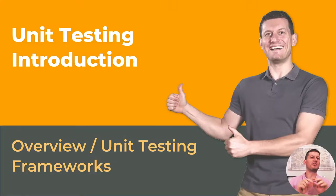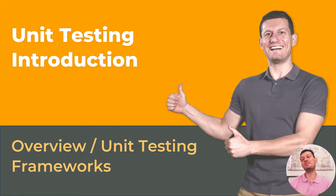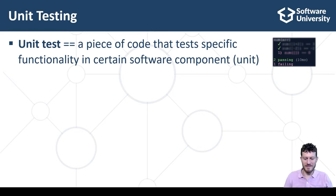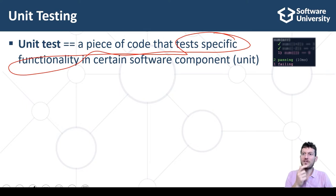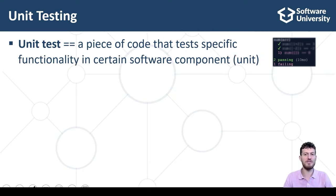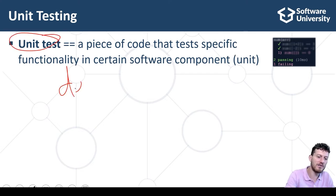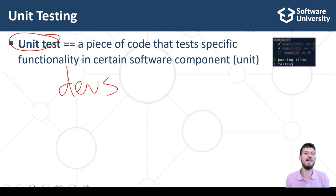Unit tests are pieces of code that test specific functionality in a certain software component, which is also called a unit. It is performed by software developers using testing frameworks and testing tools. Unit tests are part of the production source code and aim to improve code quality, reliability and maintainability.